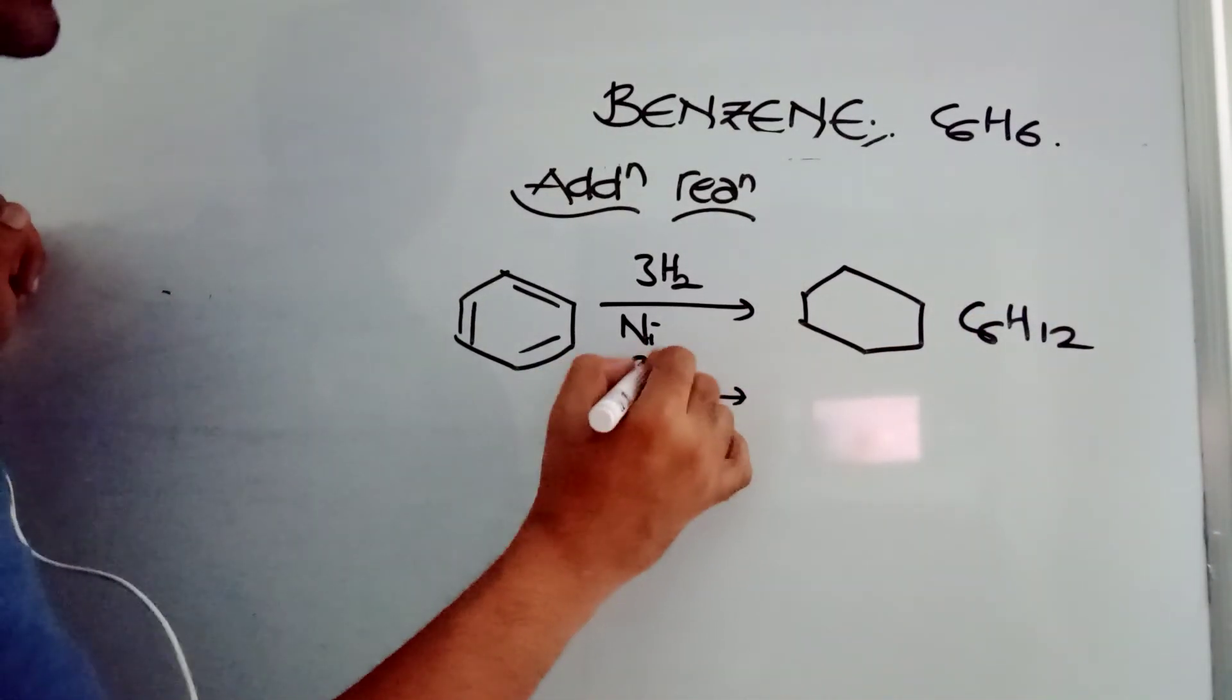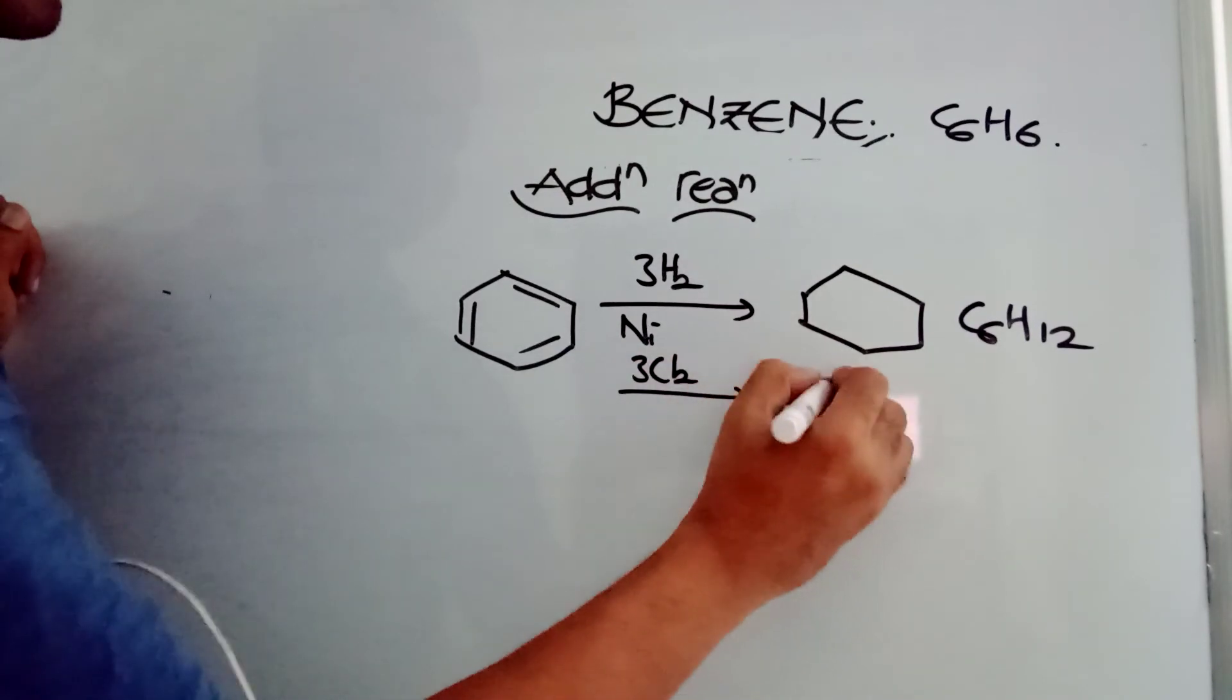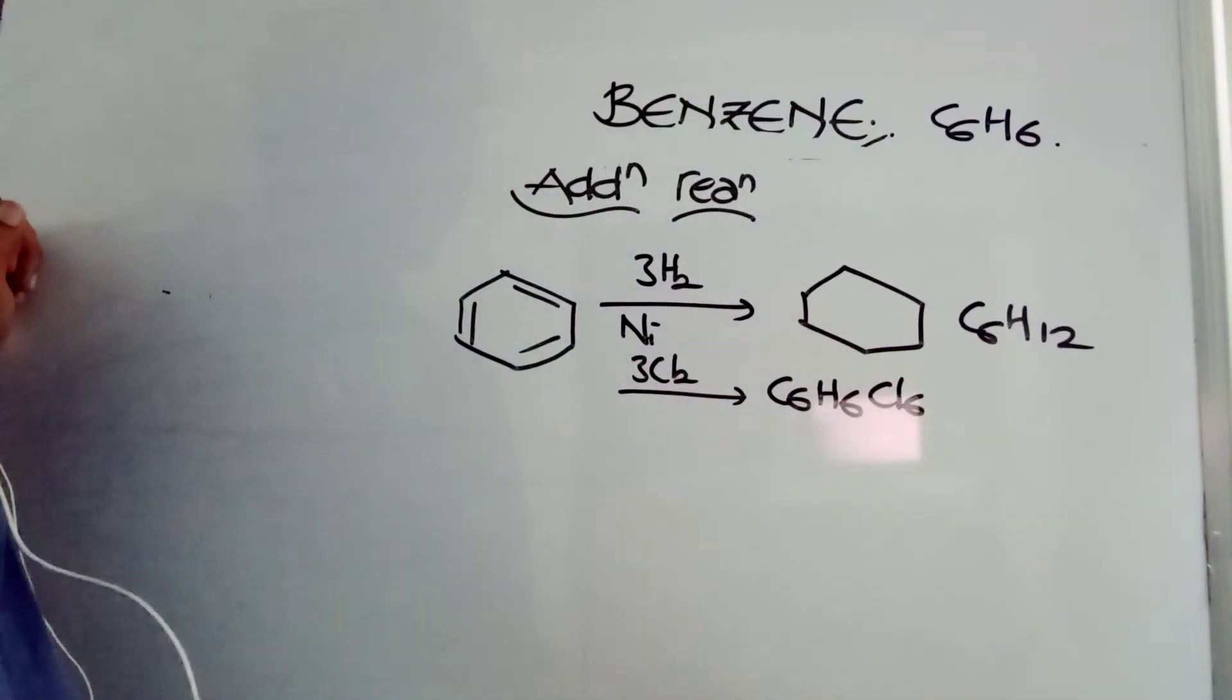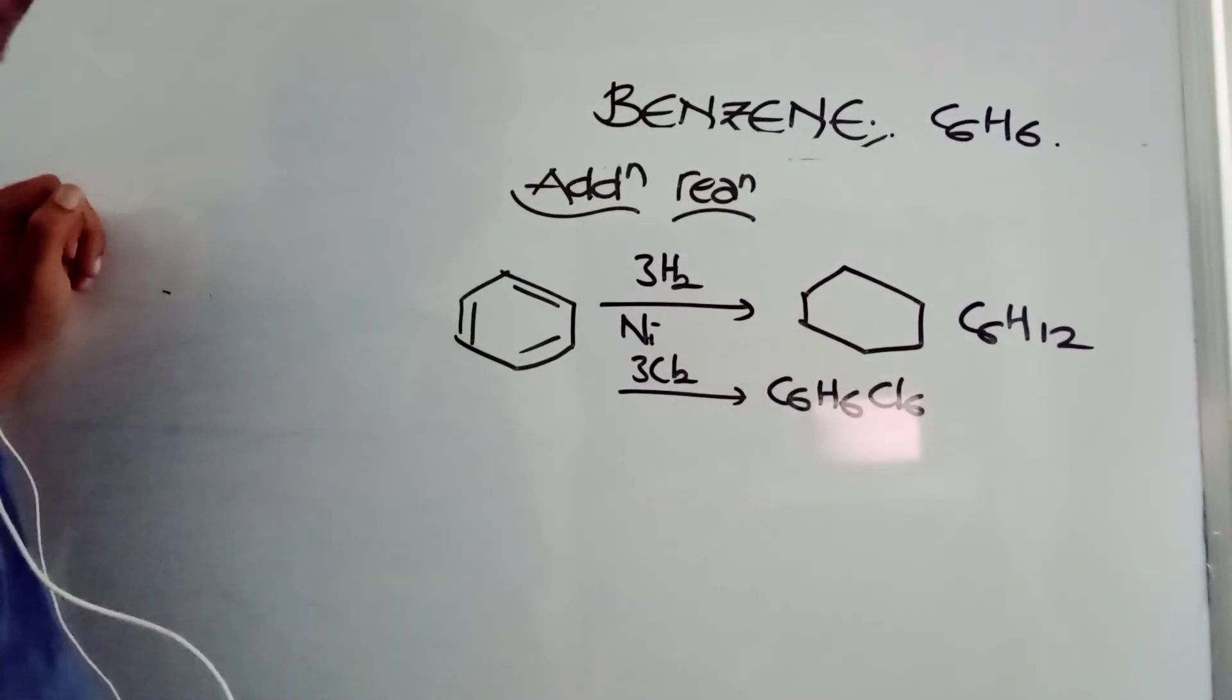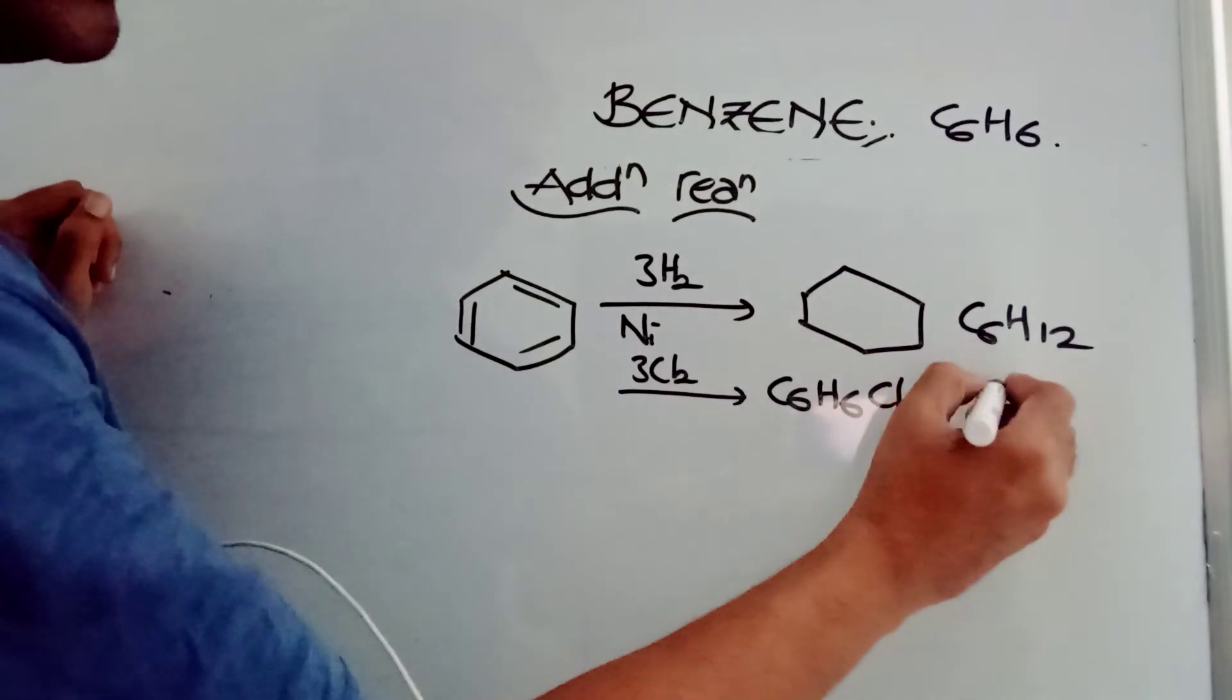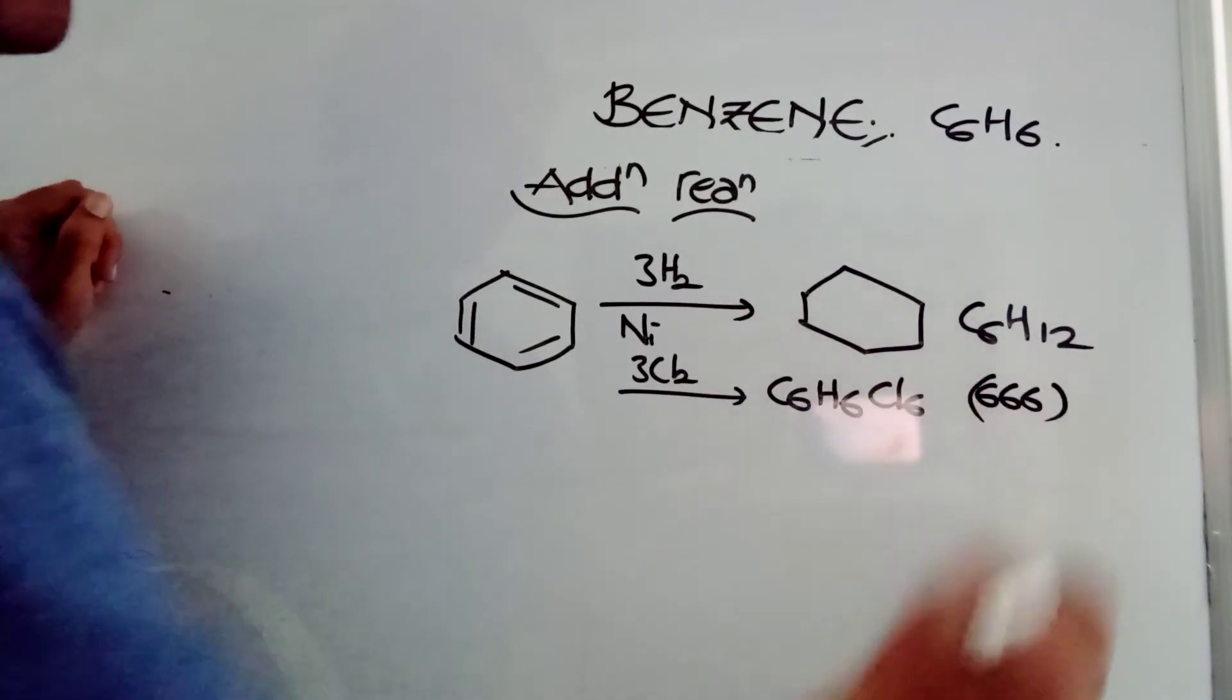It can react with three moles of chlorine to form C6H6Cl6, hexachlorocyclohexane, or in our regular language, in our daily life language, we call this gamaxine powder. For ants' purpose we use gamaxine, hexachlorocyclohexane C6H6Cl6. This is also called triple six, gamaxine.